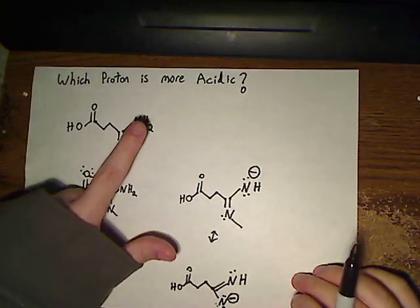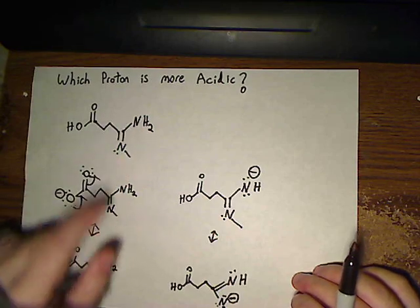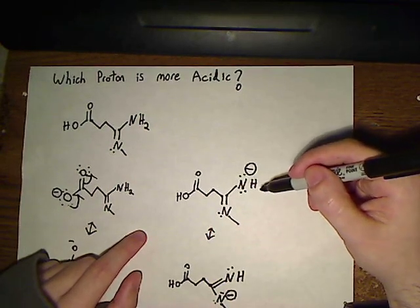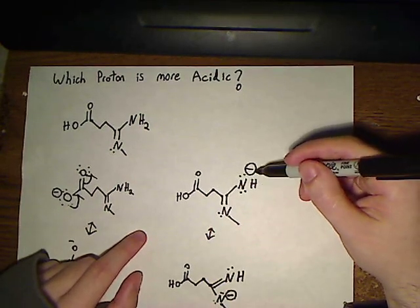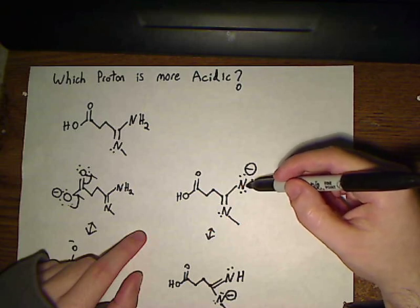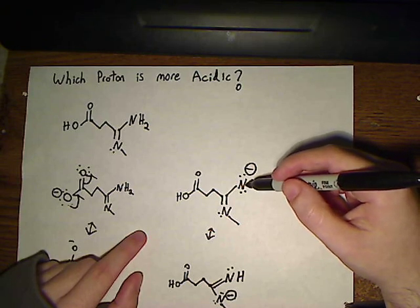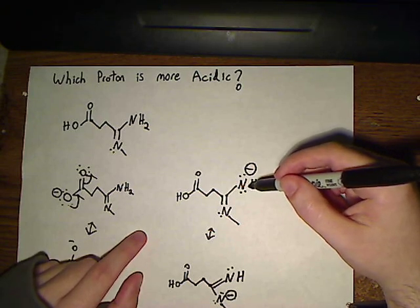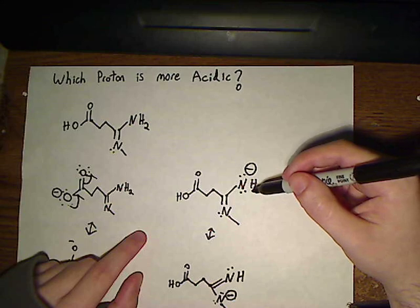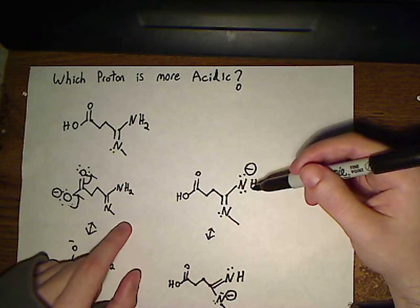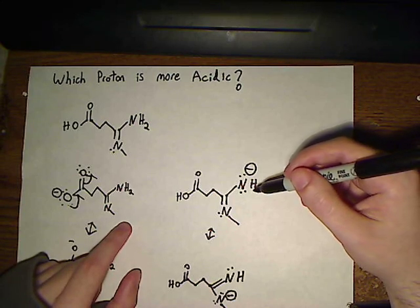Now we're going to look at this proton over here. If that's removed, you're also stuck with a negative charge, but now it's on a nitrogen atom, which is somewhat less stable than a negative charge on an oxygen atom because oxygen is a more electronegative atom.